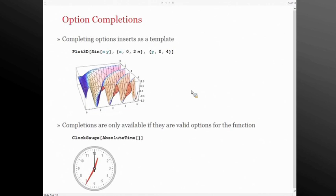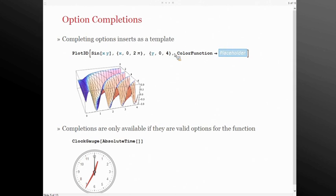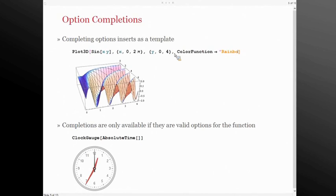One of the most requested features for completion has been options. A lot of our functions take very many options and option completion was always highly requested. So for version 9 we actually made it so we can do option completion. Here I have a plot I'm not particularly fond of the color, so I'm going to change it. Lo and behold, this gives me a completion list of only the options available for Plot3D. When I insert it, I get a nice little template to help fill in the rest without worrying about all the structural details.